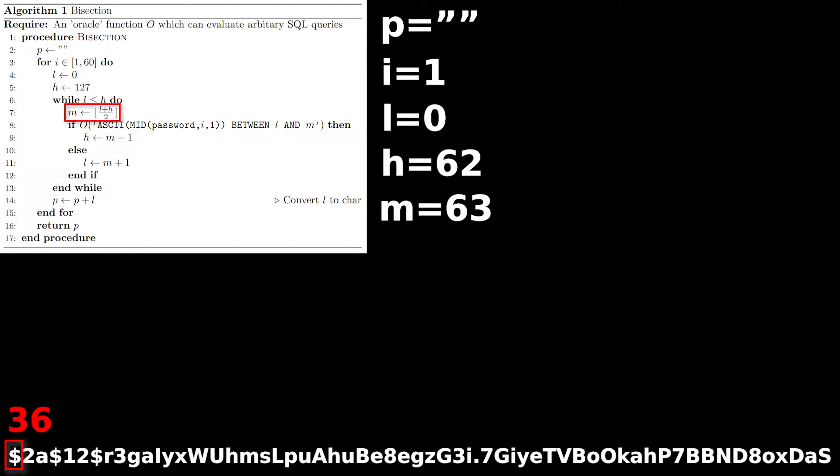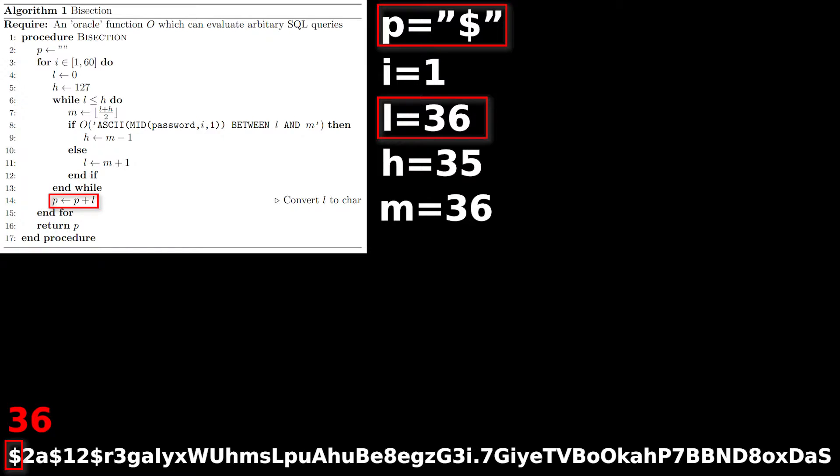For the next iteration, we calculate the midpoint M as 31, ask the server if the target character is between 0 and 31, and the server will say no, so we raise the lower bound L to M plus 1, or 32. This repeats 5 more times until L becomes greater than H, at which point the value of the first character of the password will be stored in L, and we can append this to P. This repeats 59 more times until the entire password is stored in P.